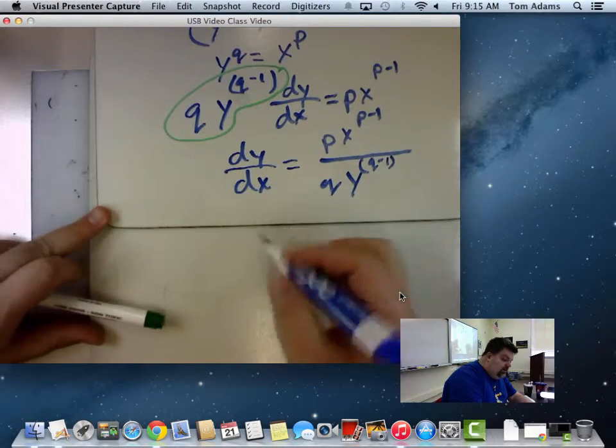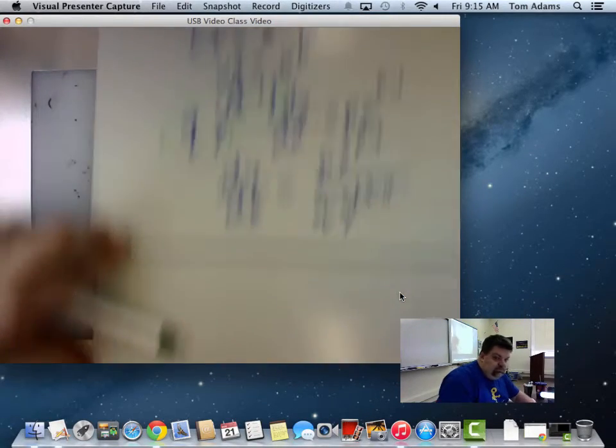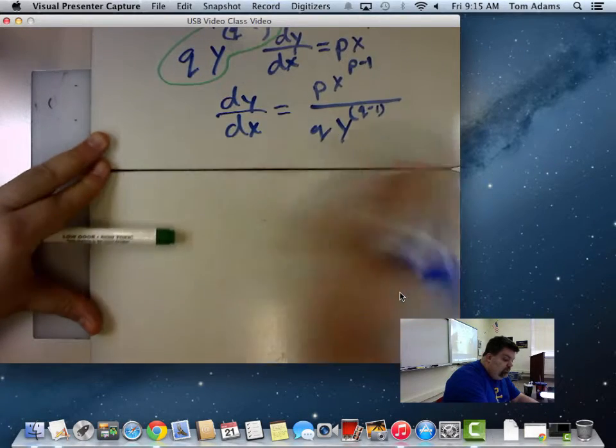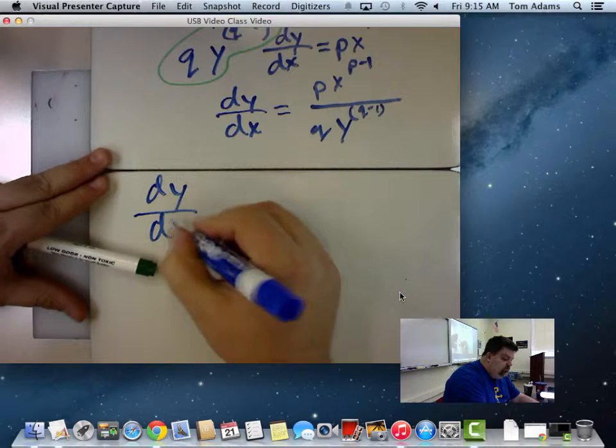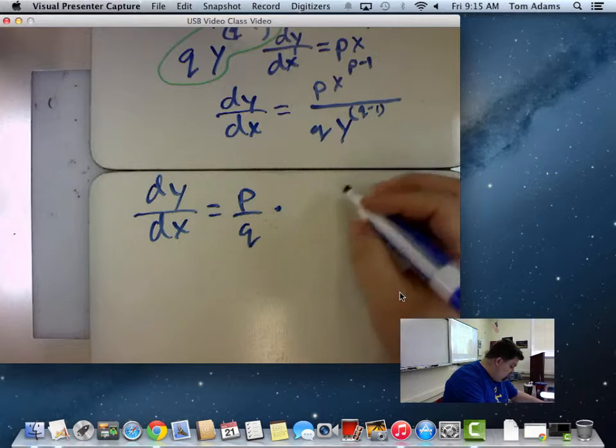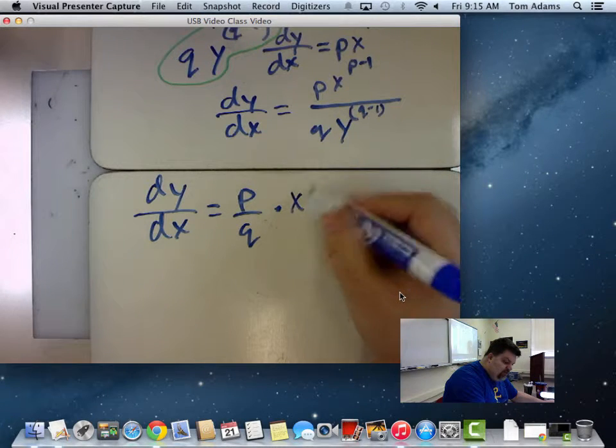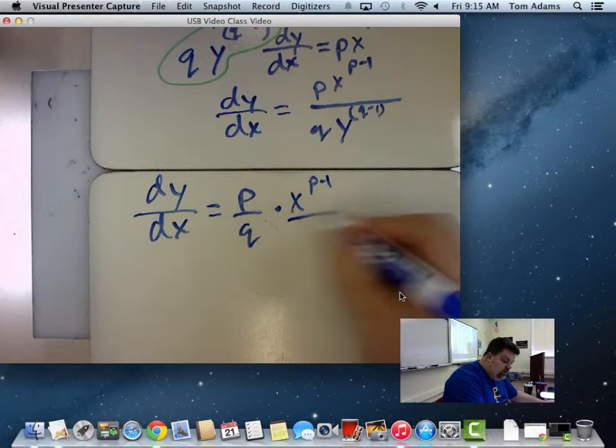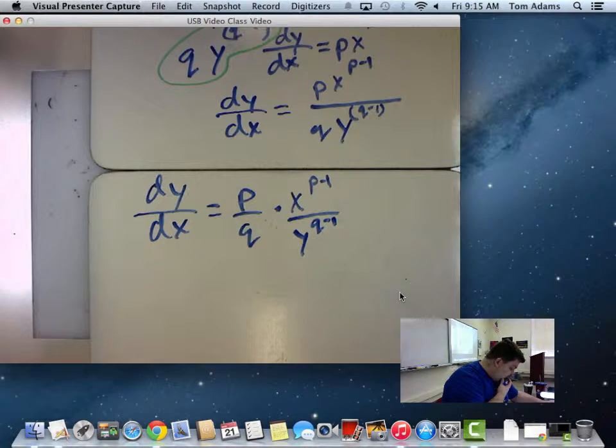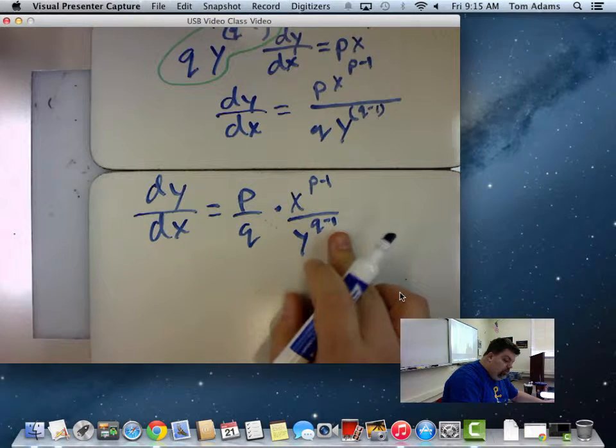All right. Well, now what I could do is I could say DY DX is equal to P over Q times X raised to the P minus 1 over Y raised to the Q minus 1. But wait a minute. What is Y?